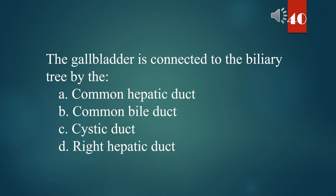The gallbladder is connected to the biliary tree by the: A. Common hepatic duct. B. Common bile duct. C. Cystic duct. D. Right hepatic duct. The answer is C. Cystic duct.